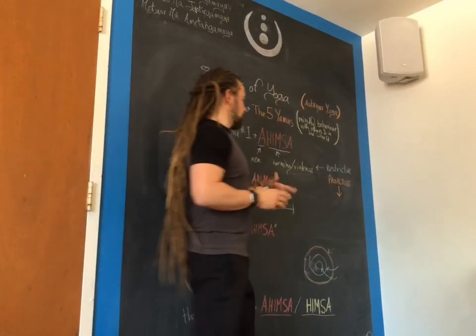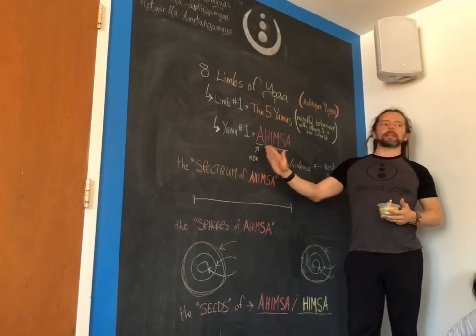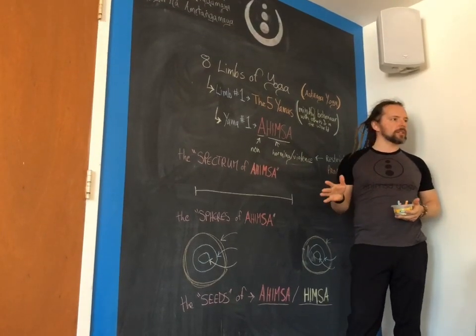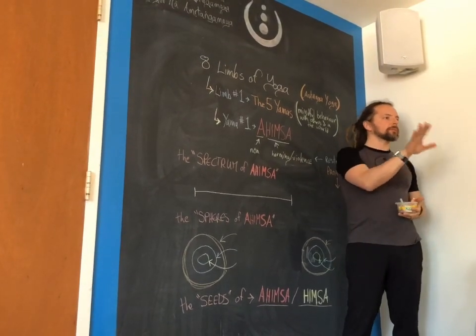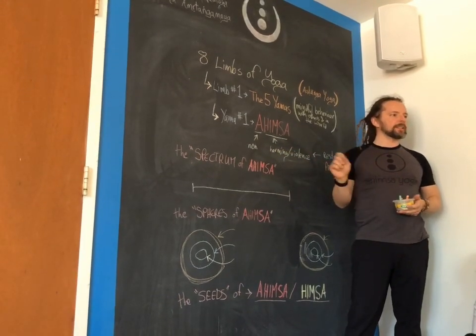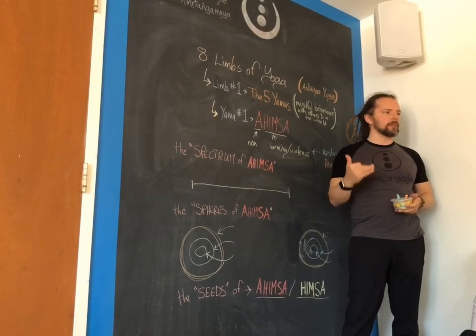The first of the eight limbs of yoga is ahimsa. It's a two-part word. The A is like non and the himsa part is harming. So the simple translation - teach trainees, take note, this is on the exam - ahimsa, non-harming. If you just write that down in your exam, you're going to get your mark. But that is not really what ahimsa is all about.